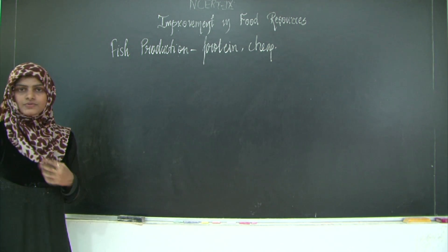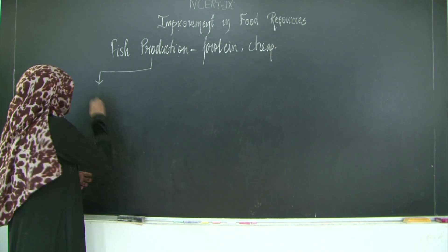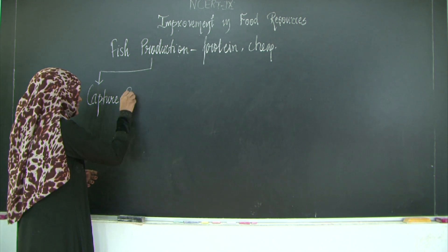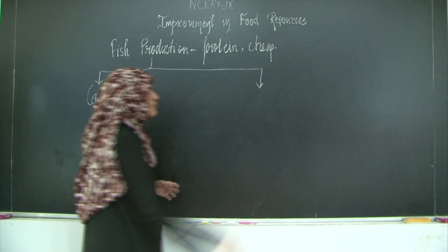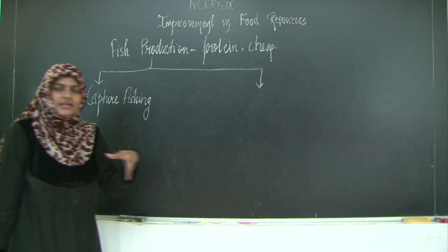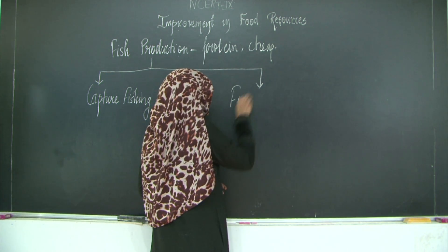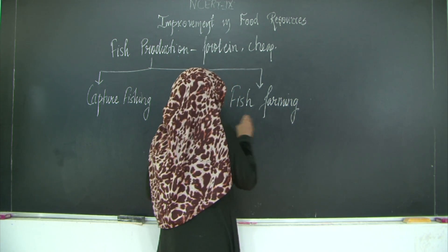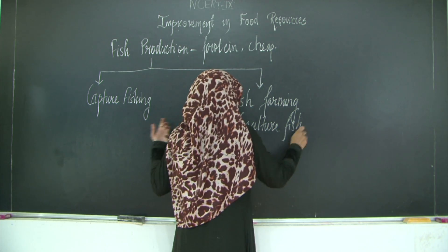You can have two types of fishing. The first one is simple fishing, called capture fishing. The other way is fish farming, also known as culture fishing, where I will be growing and rearing the fish.